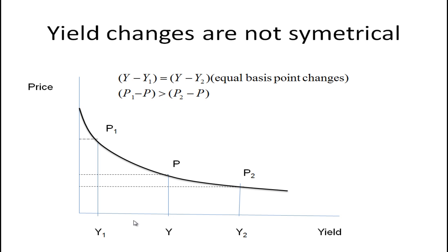You'll notice here that I have a yield Y, and then I have two different yields Y1, which is a yield where the interest rate has gone down, and Y2 where the interest rate has gone up. Y minus Y1, so the distance here, equals Y minus Y2. So we have an equal basis point change.